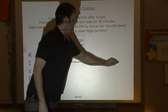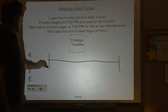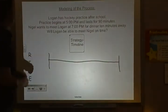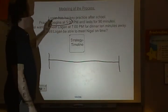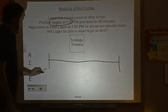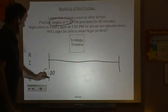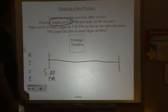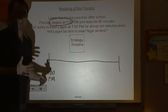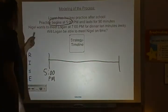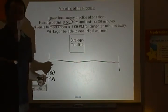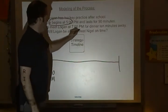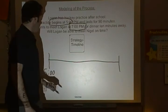I'll start drawing my timeline. I need a beginning and an end point. In this problem, do I know what time we begin with? Yes — practice begins at 5 p.m., so my first mark is 5 p.m. Do I know what time everything ends? Nigel wants to meet Logan at 7 p.m., which is 10 minutes away, so 7 p.m. is when everything ends — I don't want to go past 7 p.m.